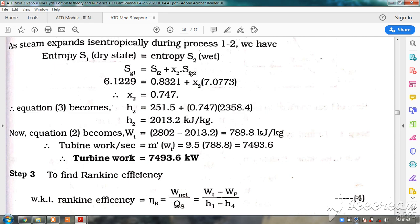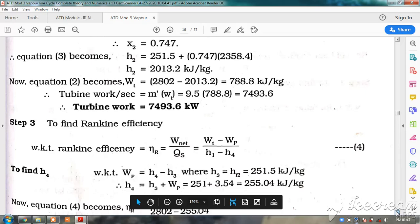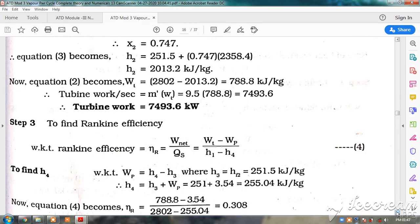That is 9.5 kg per second into 788 kilojoules per kg, which becomes 7493 kilowatt. This is the work done by the turbine, that is 7.4 to 7.5 megawatt.